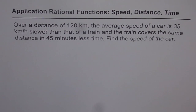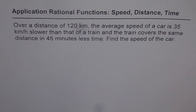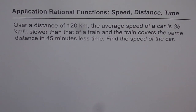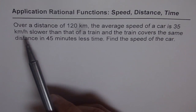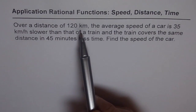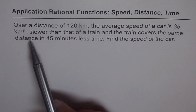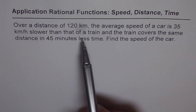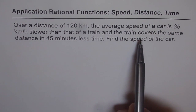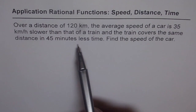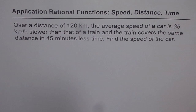Here is an application problem on rational functions. This is straight from the test paper and it is a practice test question for you. I'd like you to read the question, pause the video, solve, and then look into my suggestions. The question is: over a distance of 120 km, the average speed of a car is 35 km per hour slower than that of a train, and the train covers the same distance in 45 minutes less time. Find the speed of the car.